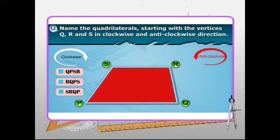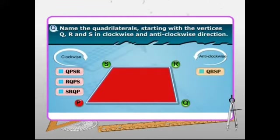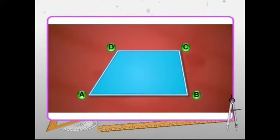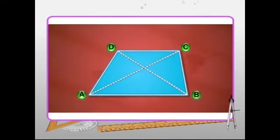And in the anti-clockwise direction it can be named as QRSP, RSPQ, SPQR, and SPQR. The line segments that join the opposite vertices of a quadrilateral are called its diagonals.